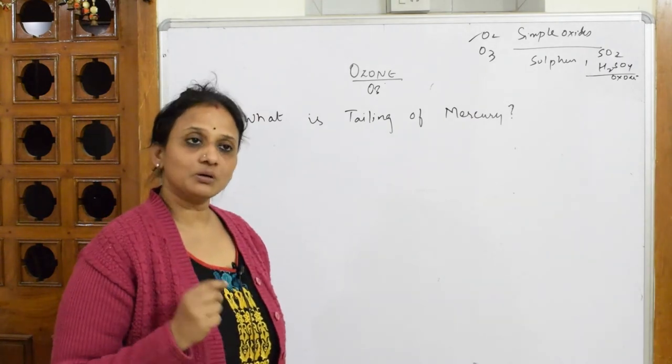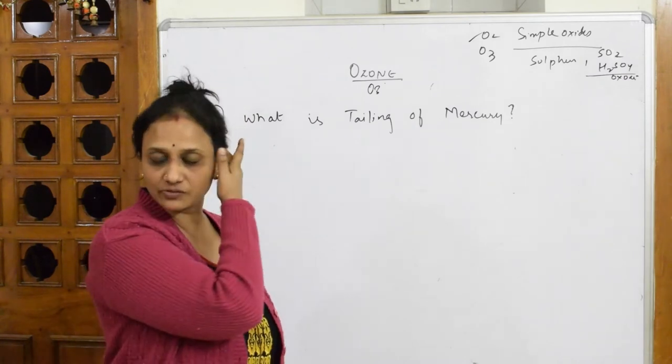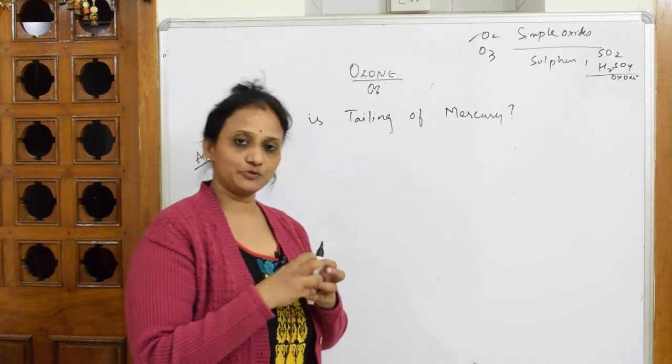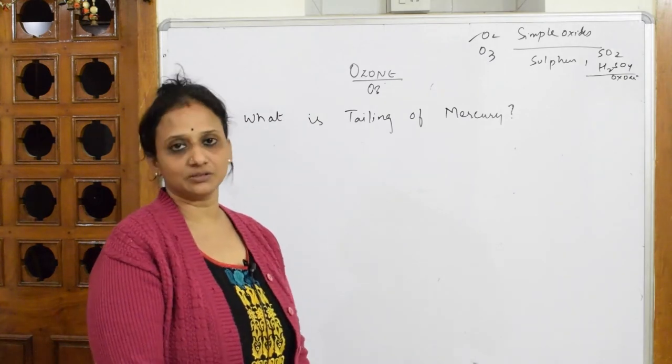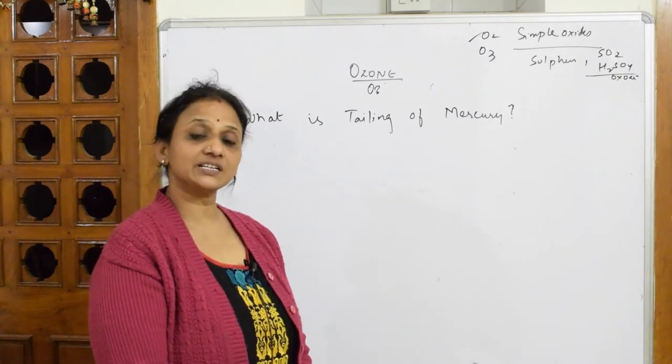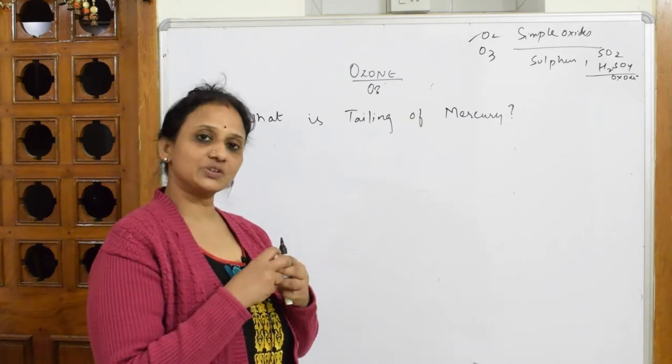It tends to flow. Why does it flow? It basically has cohesive and adhesive forces—the forces which hold that particular mercury together.